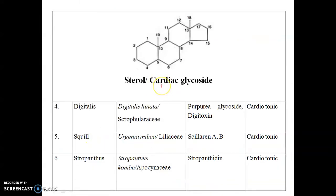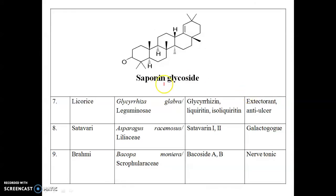Next are cardiac glycosides, which are all steroidal in nature with a cyclopentanophenanthrene nucleus, which is the steroid nucleus. Classical examples are digitalis, squill, and strophanthus — all are cardioactive glycosides. Next are saponin glycosides, which have a pentacyclic structure and are also known as pentacyclic triterpenoid glycosides. Examples include licorice, shatavari, and brahmi.